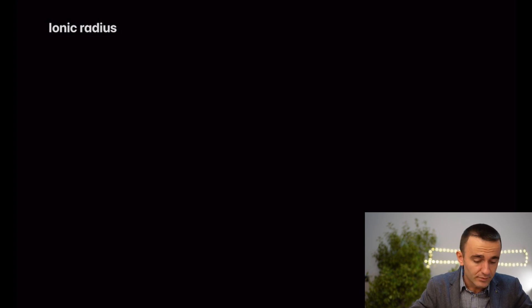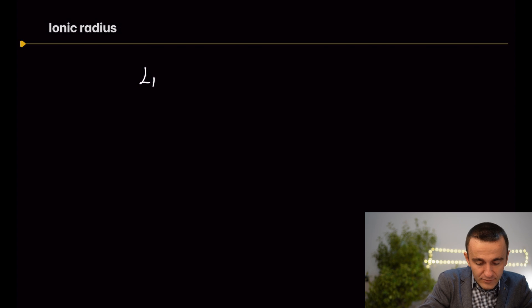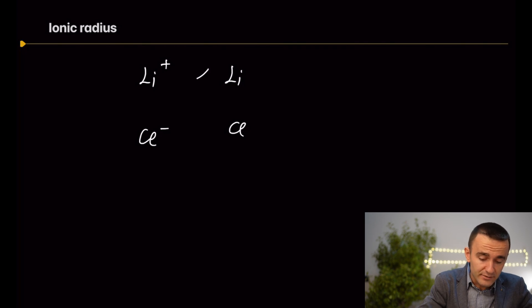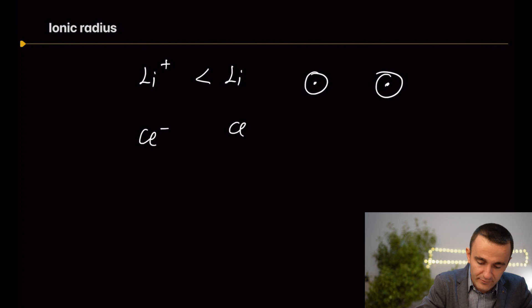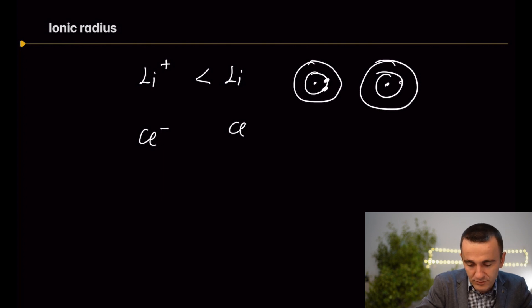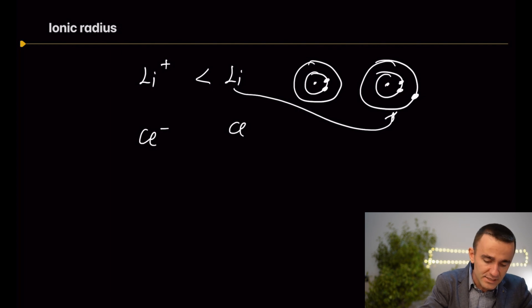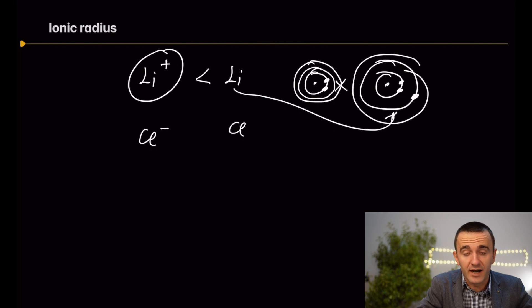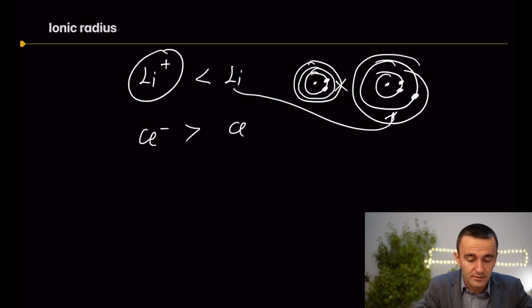Let's move to ionic radius. Take two examples: a lithium ion versus a lithium atom, and a chlorine ion versus a chlorine atom. For cations, the atom always has the bigger radius. In the lithium atom, there is an additional electron in the 2s orbital, whereas in the lithium ion that electron is absent — so the ion has a smaller radius. For anions, the ion has a bigger radius because electrons are being added to the shell.